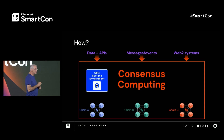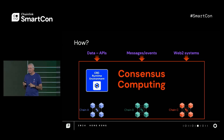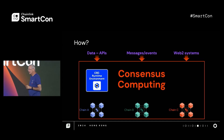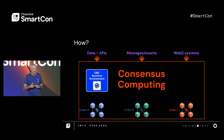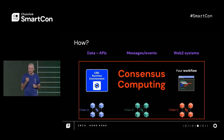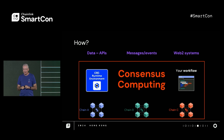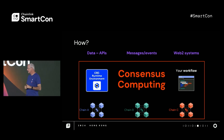As you heard from Sergey, we've been building the Chainlink Runtime Environment, the CRE. It's a runtime for DONs — decentralized oracle networks — and it automatically gives you just the right consensus model for your particular use case. Just like any good runtime, it completely abstracts away all the hard bits; you don't have to think about them at all. In other words, it gives you a simple programming model for DONs.